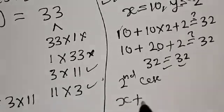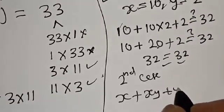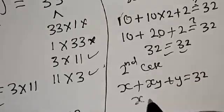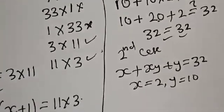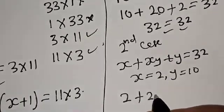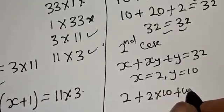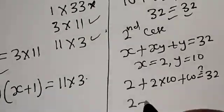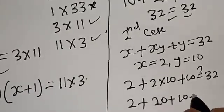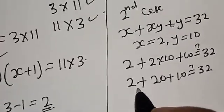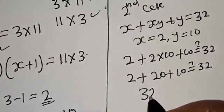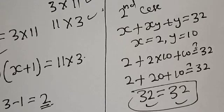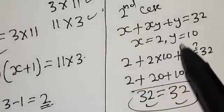Let's also check the second case. Given equation: x plus xy plus y equal to 32, with x equals 2, y equals 10. We have 2 plus 2 times 10 plus 10, which is 2 plus 20 plus 10, that is 32 equals 32. The left hand side equals the right hand side — we satisfy the given equation. If you have enjoyed the class, please don't forget to like, share, comment and subscribe. Thank you.